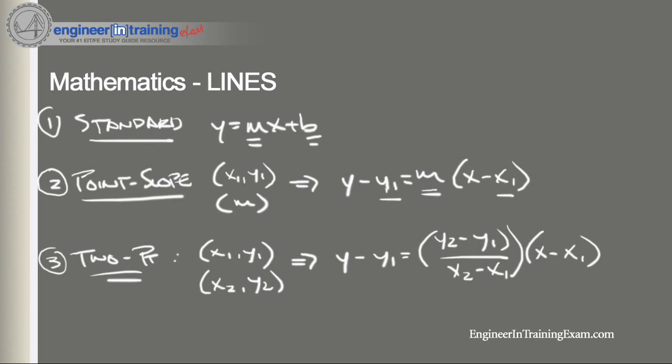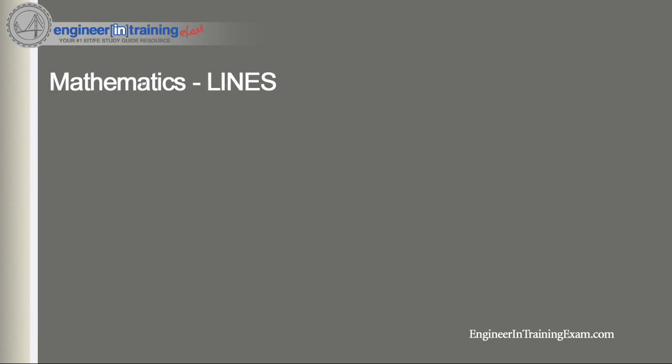So let's look at a quick example. Let's say we have a problem and we're given two points. Those points are negative 2, 1 and 1, 2.